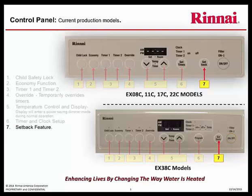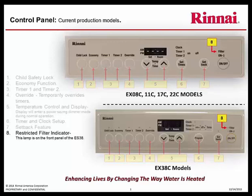Setback feature: this allows for energy savings when no one is present in the structure, or can be used as a frost protection feature. Restricted filter indicator lets you know that not enough air flow is passing through its cabinet, which is generally an indication that the air filter has become clogged.